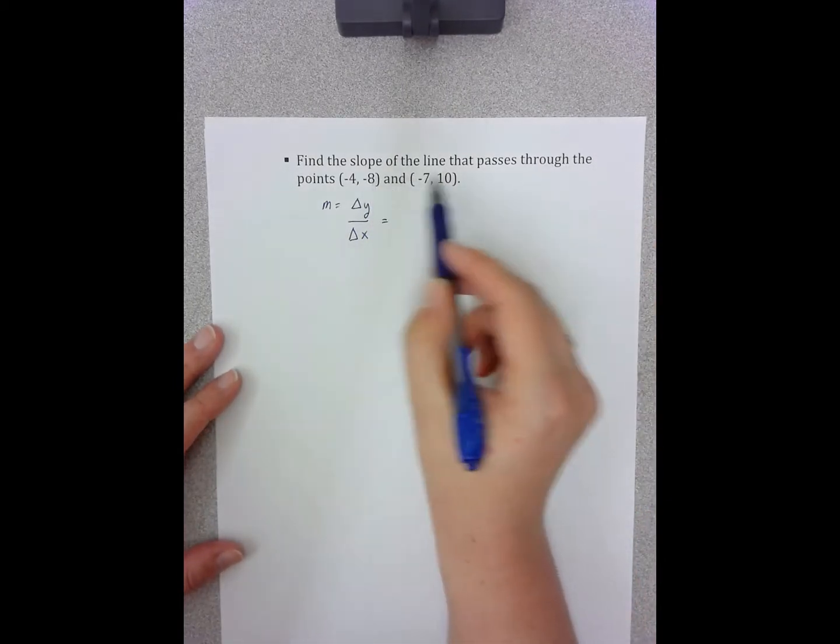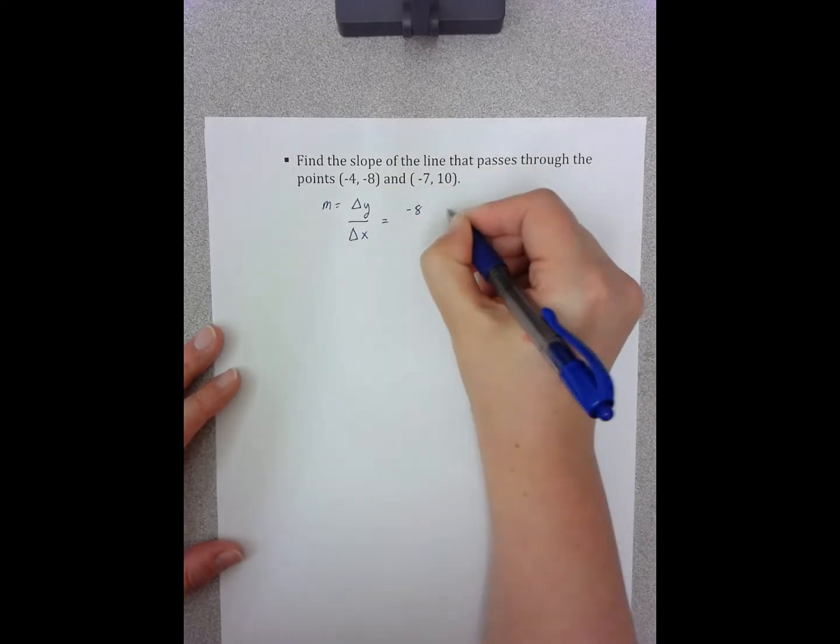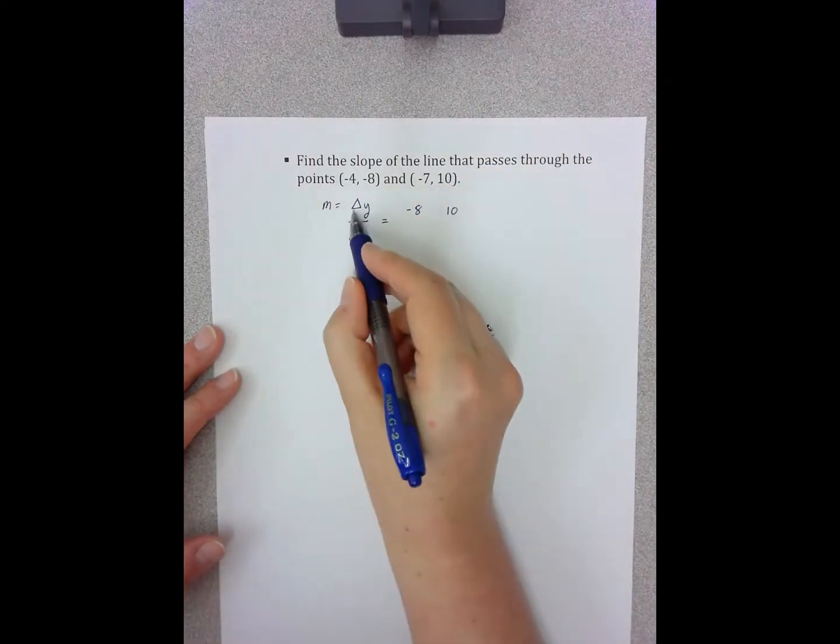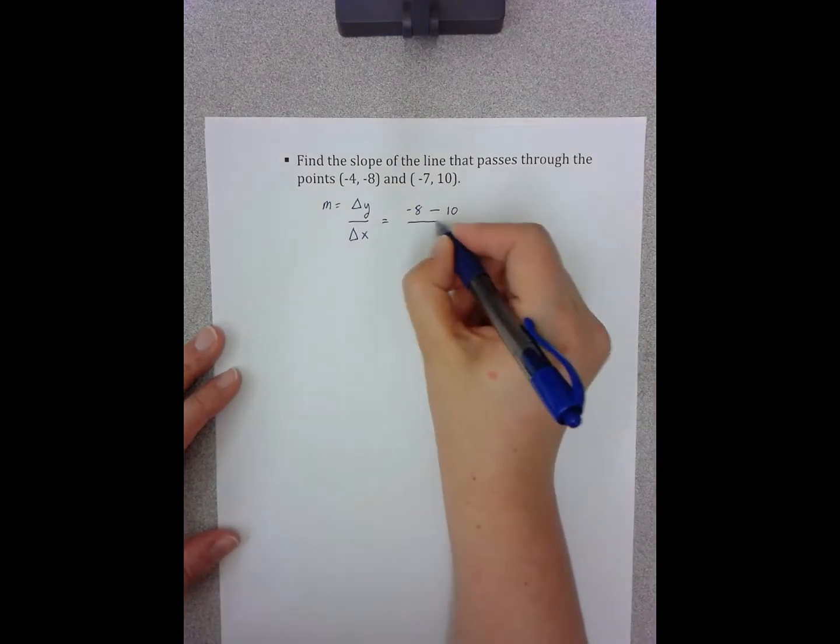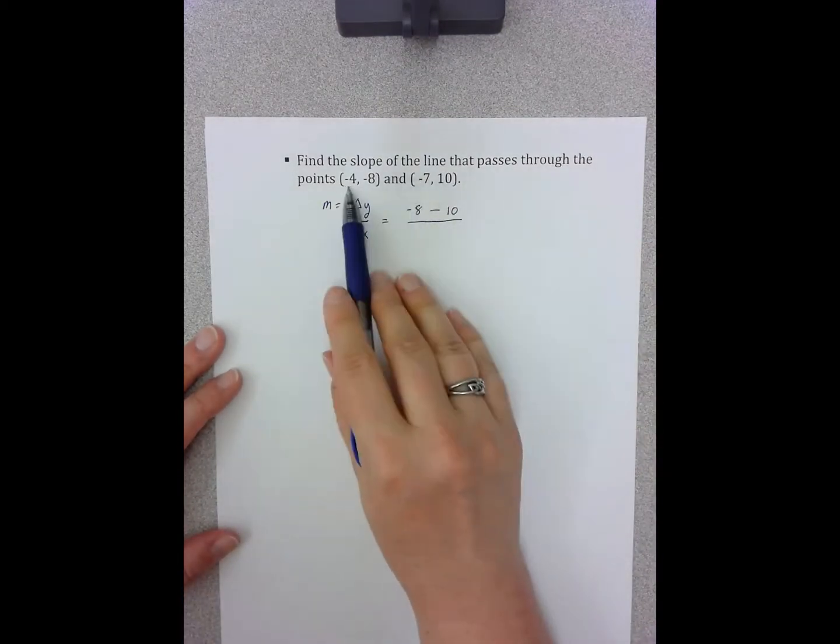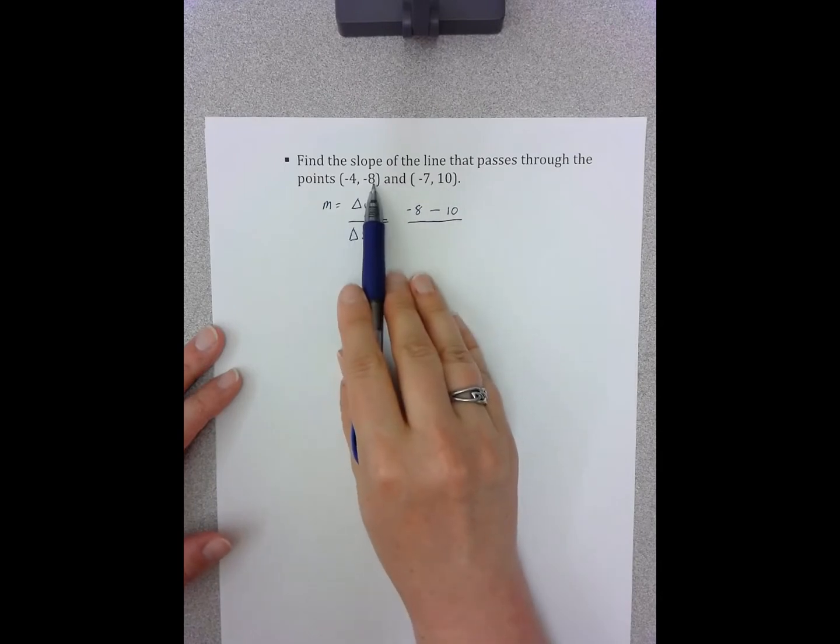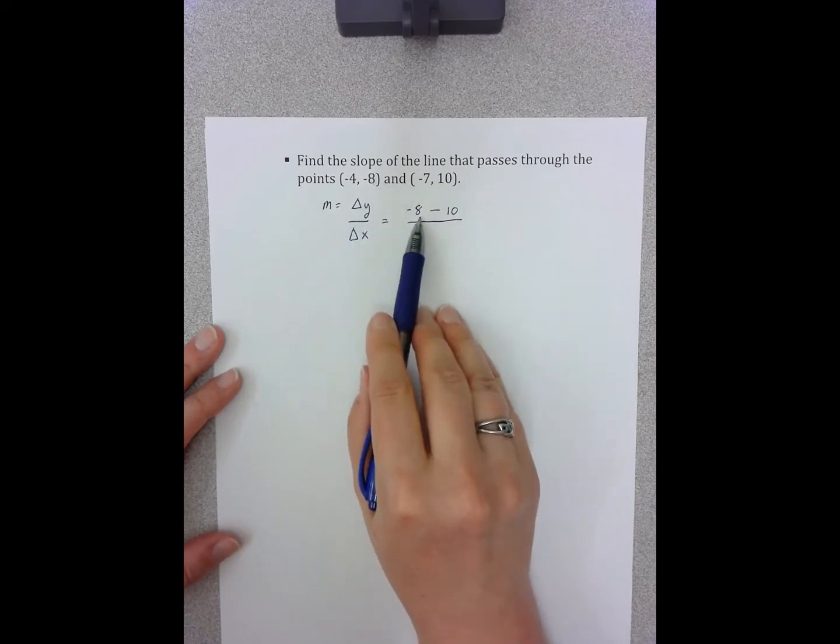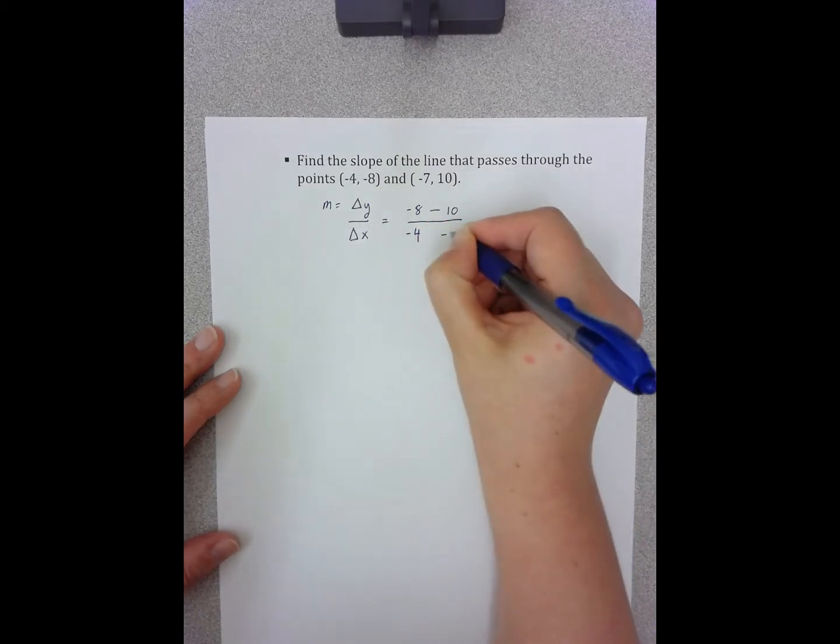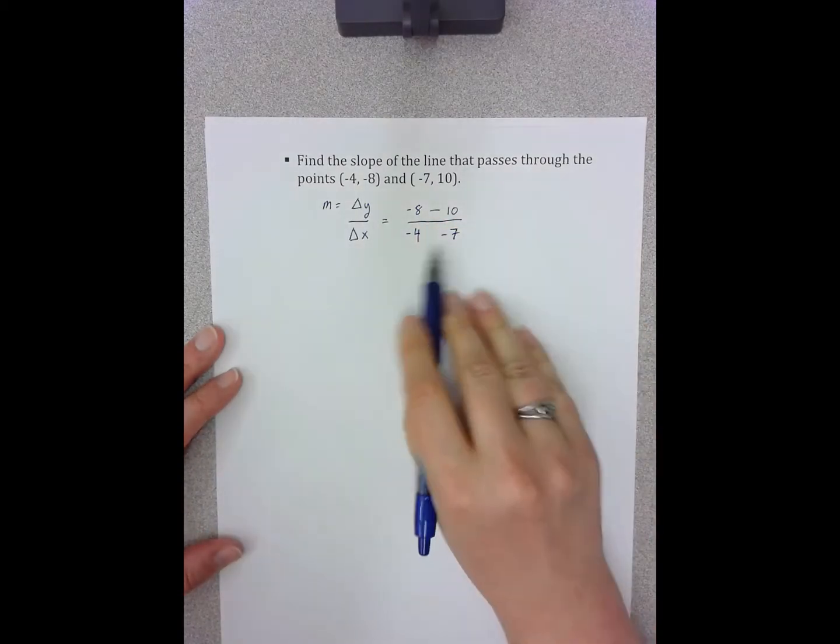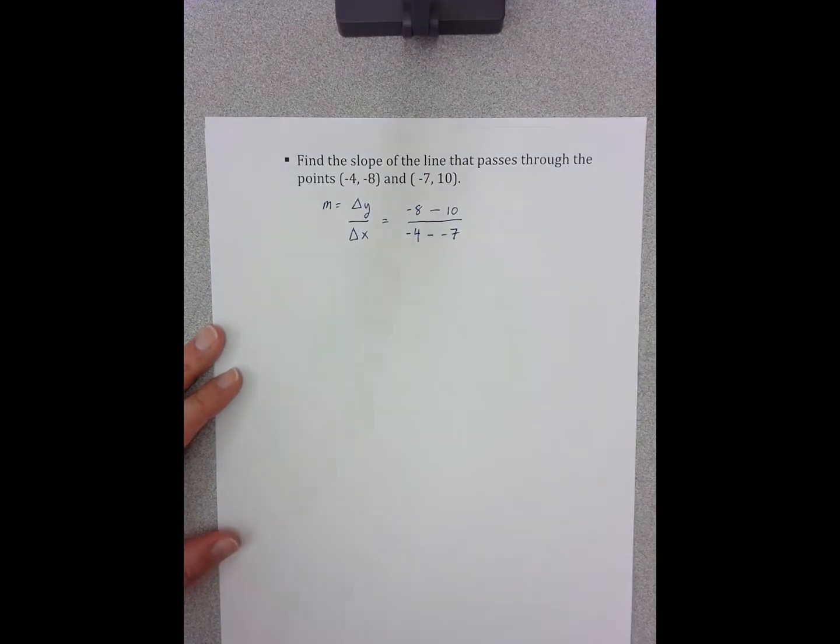So I'm looking at my y values. So I have negative 8 and 10, and I'm going to take the change in them, so I'm going to subtract. Then I'm going to look at my x values, being sure that because I picked this as my first for the y's, I have to pick this as my first for my x's. There are my two x's and there's my change in.